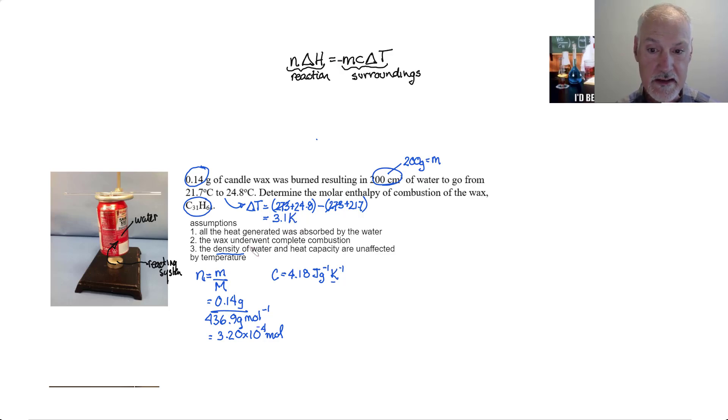Now, I'm not saying that 3.1 Kelvin is the same as 3.1 Celsius but what I am saying is the temperature change of 3.1 Celsius is the same as a temperature change of 3.1 Kelvin. So, you can subtract the Celsius temperatures to get the temperature change in Kelvin. So, I have all of my prerequisite information.